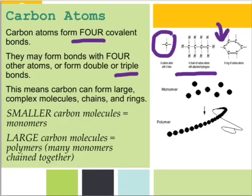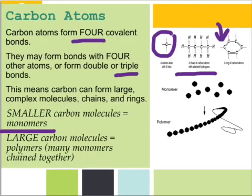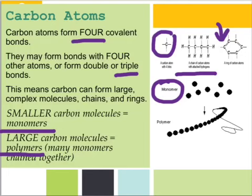There are a couple of terms to know. First, there are smaller carbon molecules called monomers — think of these as the parts of something larger, like one link on a chain. Carbon also forms large carbon molecules called polymers. Polymers are many monomers chained together — a whole long chain of them. Think of it like links on a chain or pearls on a string: when they're linked together, they form something called a polymer.